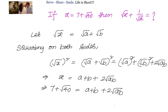Now let us equate the different parts. We will have a plus b equals 7 — that is the rational part. And for the irrational part, we have 2 root ab equals root 40, which can be written as 2 root 10.